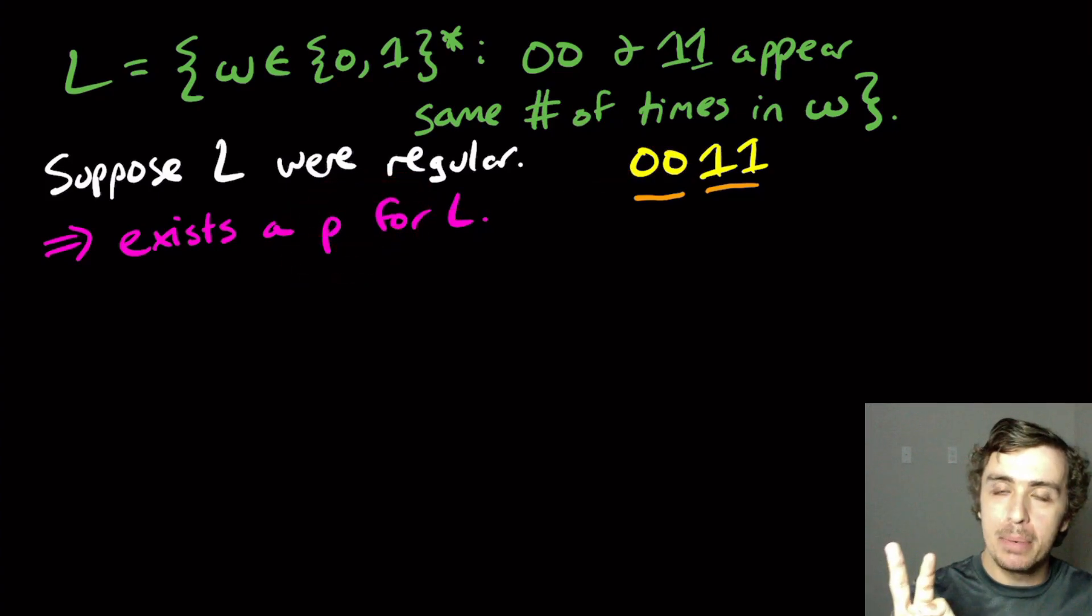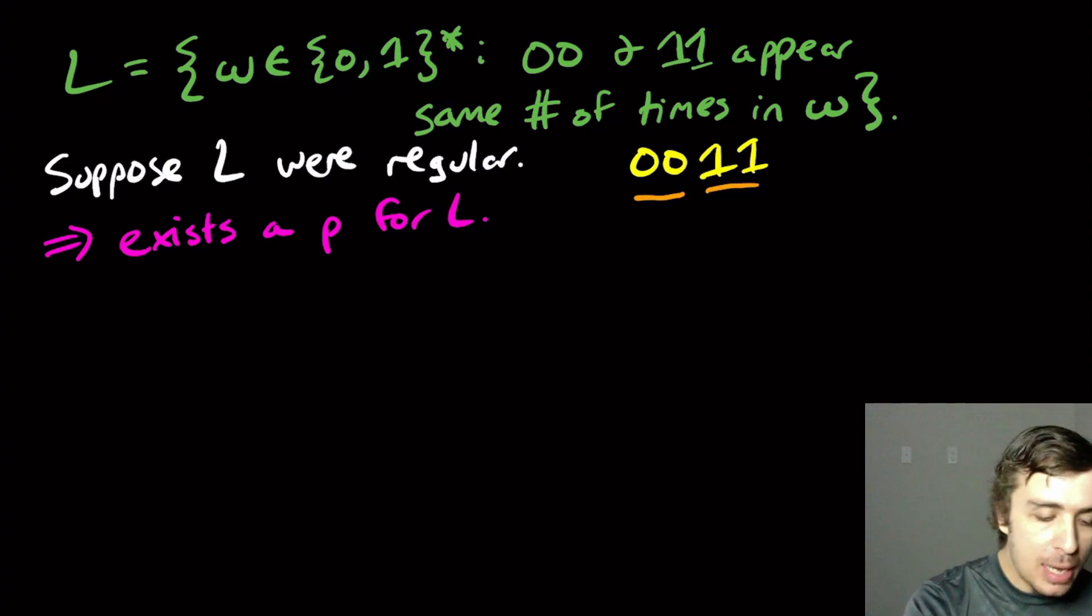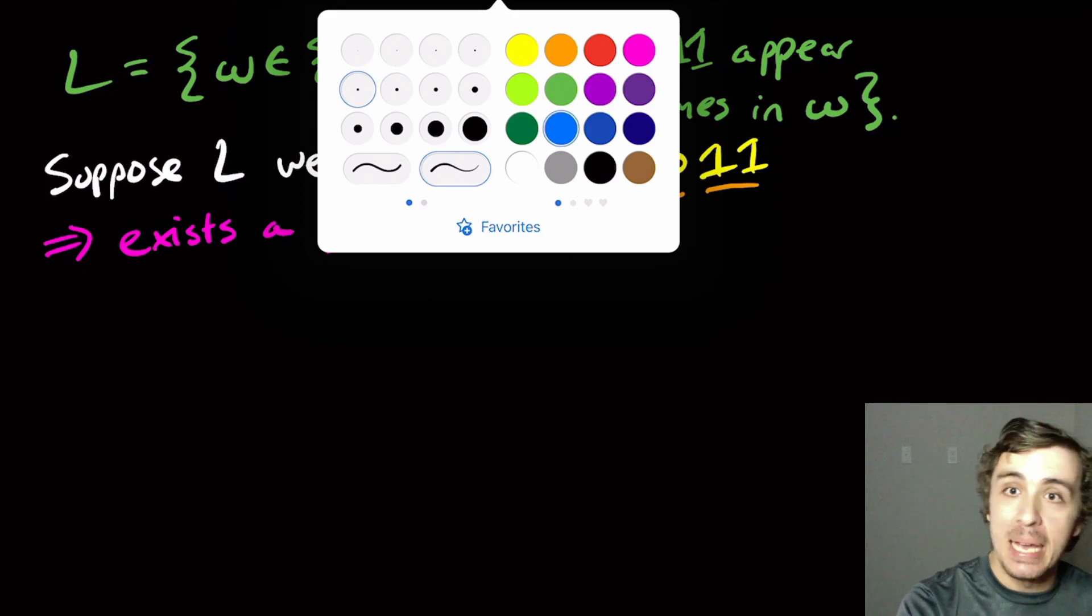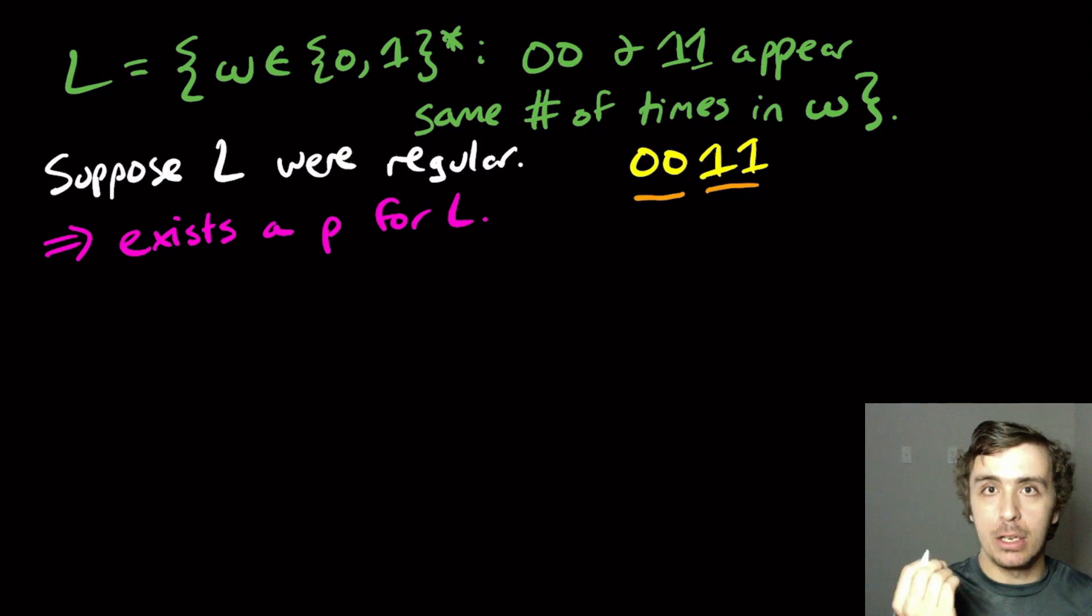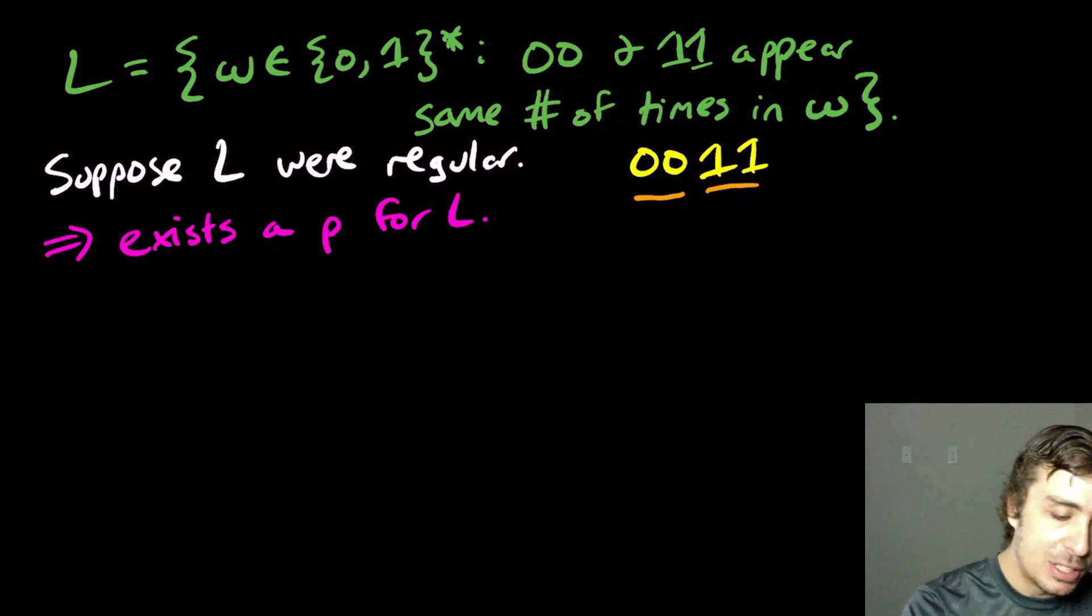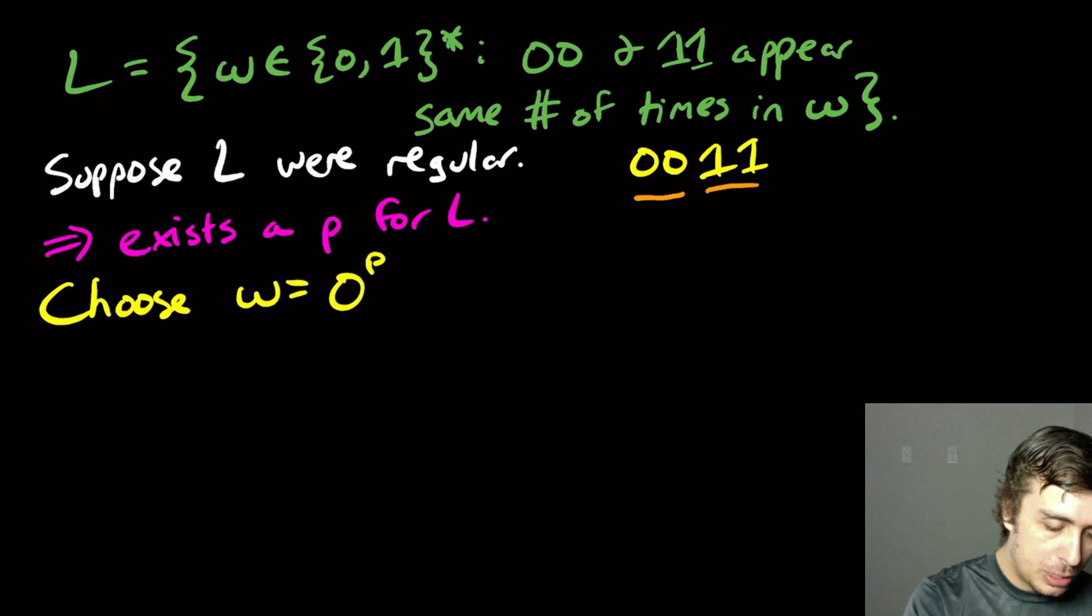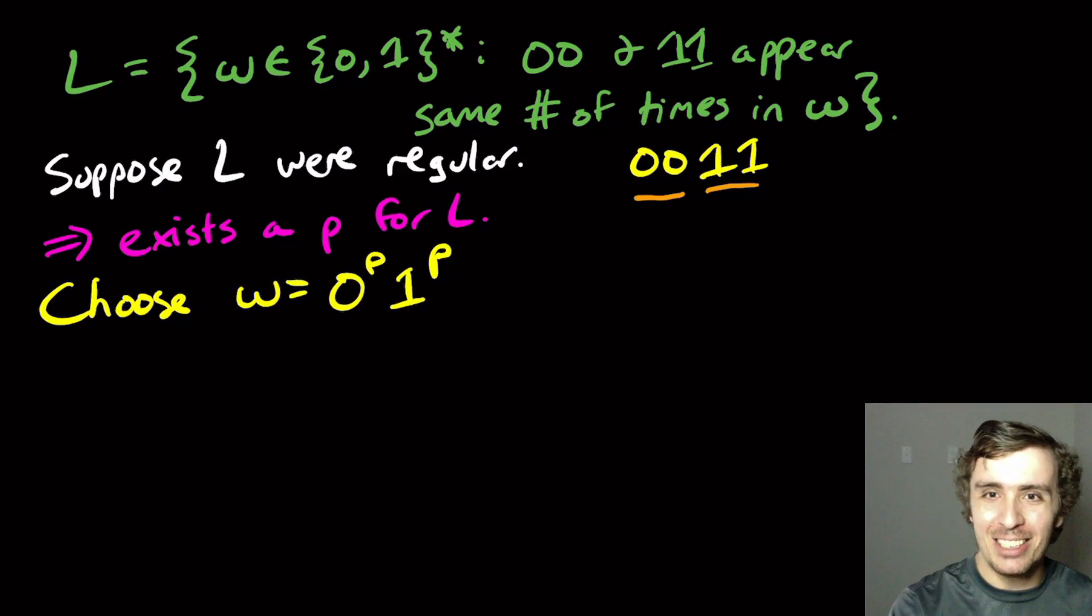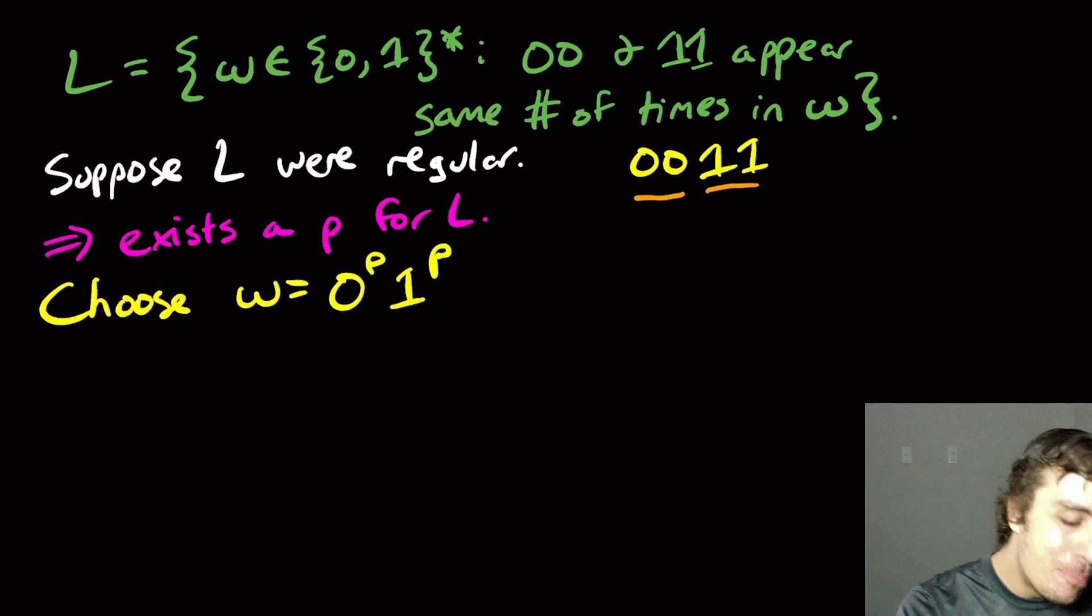It has to have the same number of 00 occurrences as 11 occurrences. There's a lot of different strings you can actually pick in this particular case. I'm going to choose W to be equal to 0^P 1^P. You think, huh? There's no 00s in there, there's no 11s in there. Au contraire.